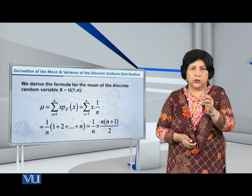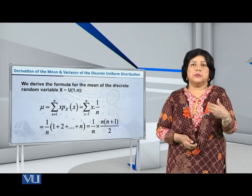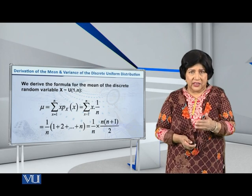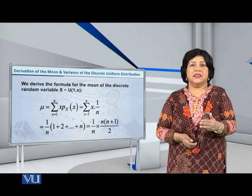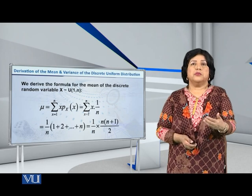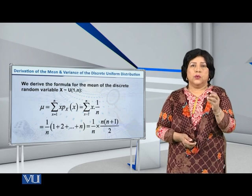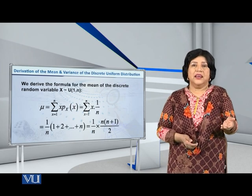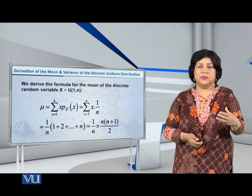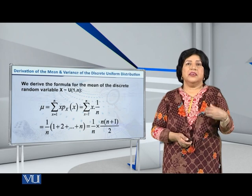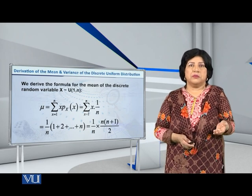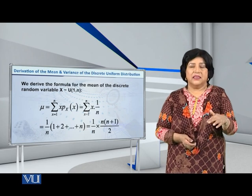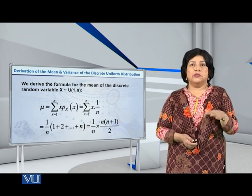If we expand and write summation x, what will we get? 1 over n with 1 plus 2 plus so on up to n. Now you know a basic rule, that the sum of the first n natural numbers is given by n into n plus 1 over 2.